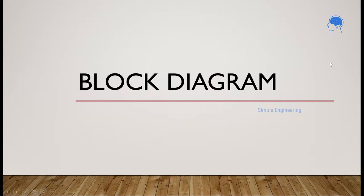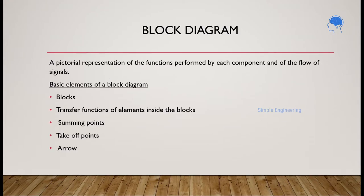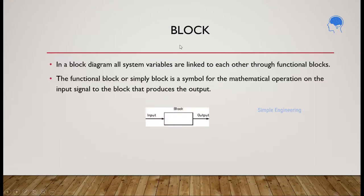Our discussion is about block diagram. First we will learn what is a block, block diagram and all. Block diagram means it is a pictorial representation — in picture form, we are representing the functions that are performed by each component and there should be a flow of signals. The basic elements of the block diagram are blocks, transfer functions of the elements inside those blocks, summing points, takeoff points, and arrows. In a block diagram, all system variables are linked to each other through functional blocks.